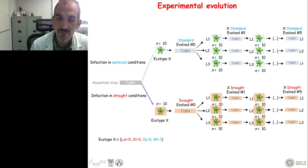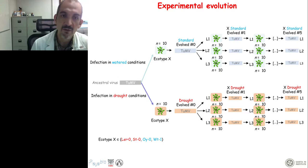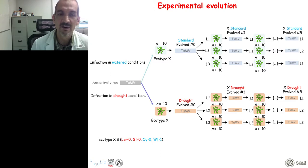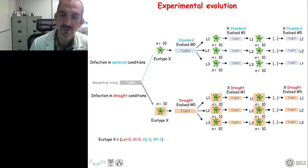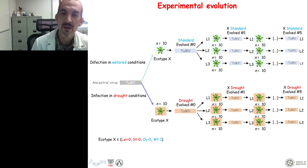We repeated this experimental design four times, for four different ecotypes of the plant: two with a strong response (Landsberg erecta and Stockholm) and two with a tolerant response (Ob-0 and Wt-1). In total, we had 24 different lineages evolving through time, and on each passage we quantified the performance of the virus.